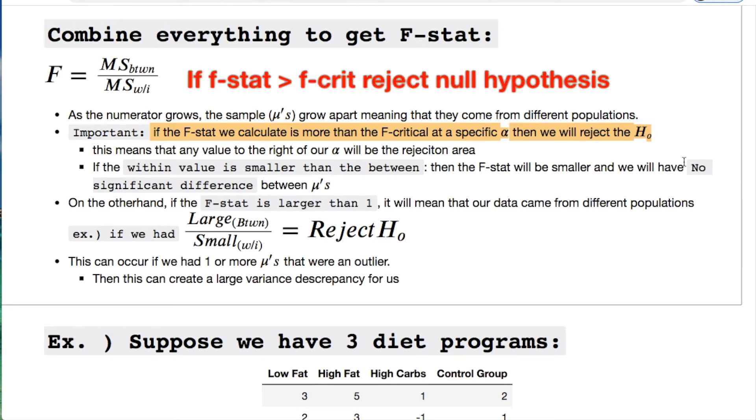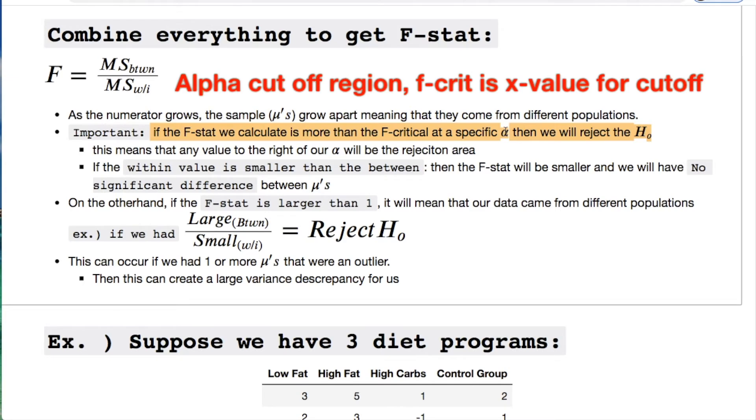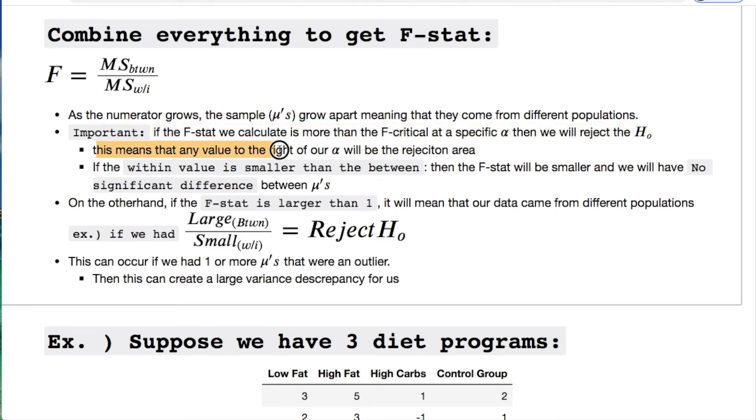If the f statistic we calculate is more than the f critical point at a given alpha, then we will reject the null hypothesis. You're going to see this in a plot so it's going to make more sense. Your alpha is going to be your cutoff region. If you had 0.05, anything left falls to the right of that is going to be the rejection zone. And the f critical is going to be the point at which it crosses the x axis to give you your division. This means that any value to the right of it is a rejection.